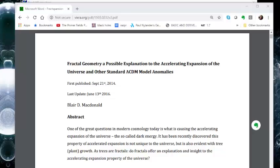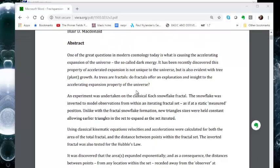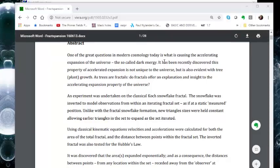Regarding the fractal expansion of the universe, I want to point you to a paper that was written by a gentleman named Blair MacDonald. It's called Fractal Geometry, a Possible Explanation to the Accelerating Expansion of the Universe and Other Standard ADC Anomalies. In this paper, he shows how zooming into a fractal is equivalent to the expanding universe. One of the great questions in modern cosmology today is, what is causing the accelerating expansion of the universe, the so-called dark energy? It has been recently discovered this property of accelerated expansion is not unique to the universe, but is also evident with tree and plant growth. As trees are fractals, do fractals offer an explanation?